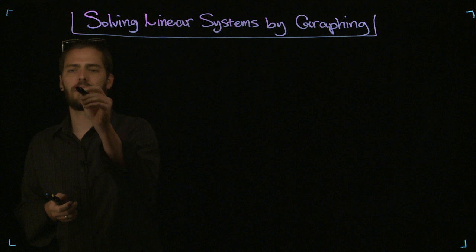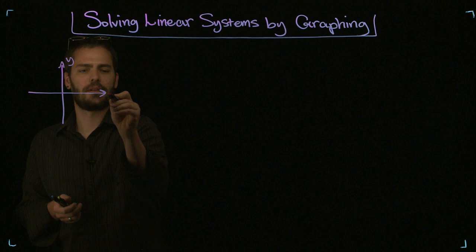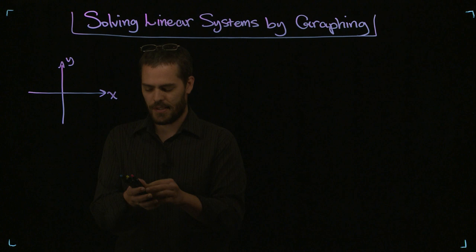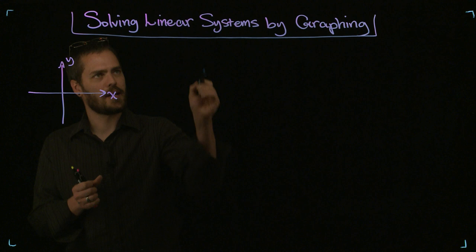So, let me start with the XY graph. Now, this lesson is assuming that you already know how to graph lines, and I'm assuming that because we're talking about solving systems, not just graphing lines. Please watch the other videos if you're interested in learning how to graph just lines. So, we know how to graph lines, we're talking about a linear system, linear means line.